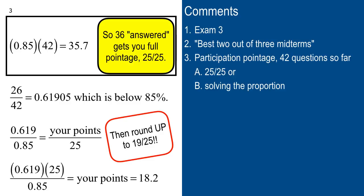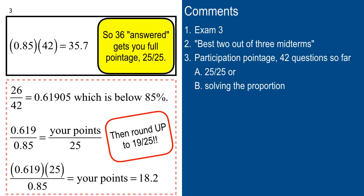Always remember on this one I always round up. So even though in math class you would round down to 18, for participation pointage and also for homework pointage, I always round up just to give you guys a break. So that one would be 19 out of 25. Put a box around that second example.